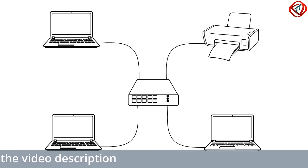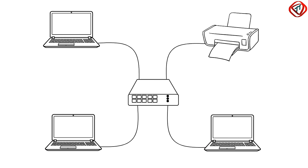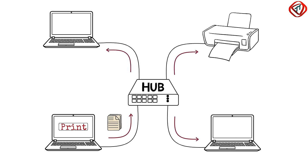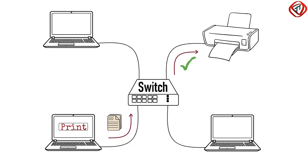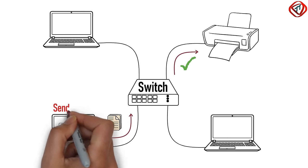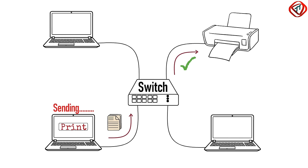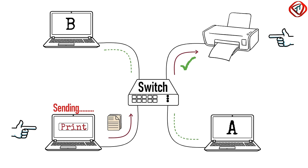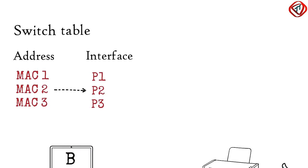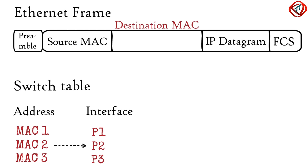Suppose your computer is connected to a printer in a star topology network and you click Print. The file is sent to the central device. If the central device is a hub, the file is forwarded to all connected computers, but only the printer accepts it. If the central device is a switch, the file is sent to the printer only — that is unicast. Moreover, when the computer is busy sending a file to the printer, computers A and B can also communicate with each other without affecting that link, meaning switched connections allow simultaneous communication, while a hub allows only one device to communicate at a time. Note that if the destination MAC address is the Ethernet broadcast address, the switch also broadcasts the received frame.